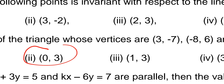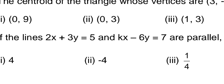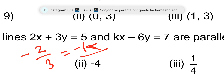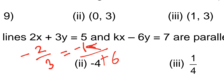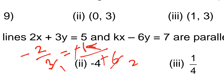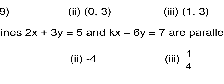Next question: lines are parallel, find the value of k. If lines are parallel, slopes are equal. Slope is minus x-coefficient upon y-coefficient, so -2/3. Setting equal to -k / -6: minus signs cancel, cross-multiplying gives 2k = -4, so k = -4. The k value is -4, that is your correct answer.